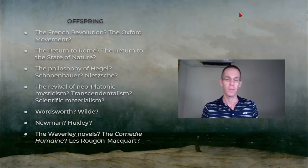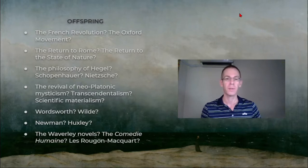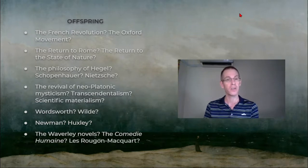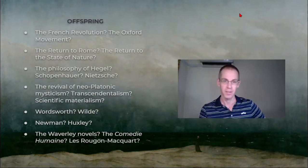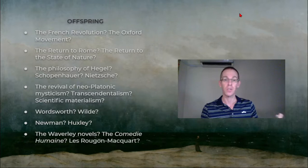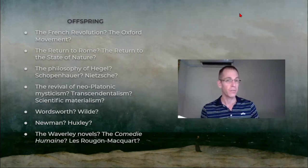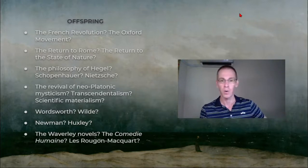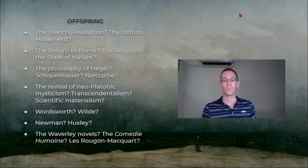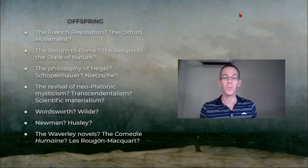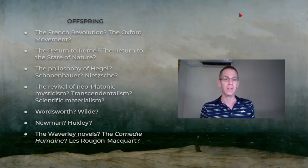So these are again kind of oppositions—things that seem to be mutually incompatible. The French Revolution and the Oxford Movement. The Oxford Movement was a more conservative kind of movement, not too important here. The return to Rome or the return to the state of nature—those are very different returnings. What about the philosophy of Hegel, Schopenhauer, Nietzsche? There are some similarities, but there's also a lot of differences among Hegel, Schopenhauer, and Nietzsche. What about, is it a revival of neo-Platonic mysticism or transcendentalism or scientific materialism?